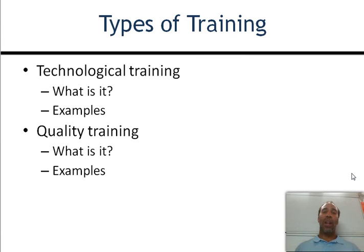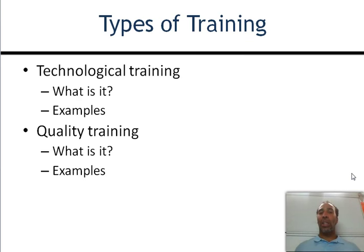Quality training — like Six Sigma — means you have to know how to replicate your process. It needs to be consistent every time; the whole point of Six Sigma is having only 3.4 defects per million. So you have to train people in terms of quality — how to audit things, even how to audit customer service calls to see if the individual did it right.